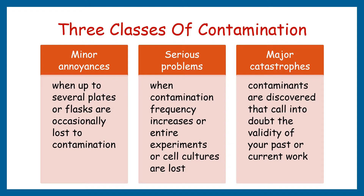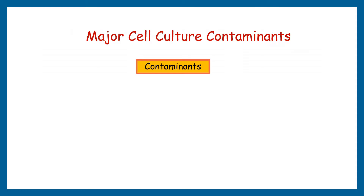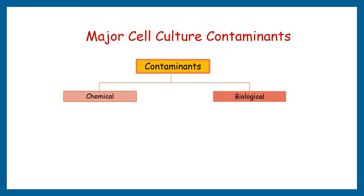Thirdly, major catastrophes, when you discover contaminants in your culture and you are forced to think whether contaminants come from present or past work. Contamination of cell culture is the most common problem encountered in cell culture laboratories, sometimes with very serious consequences. Cell culture contamination can be divided into two main categories: chemical contaminants and biological contaminants.